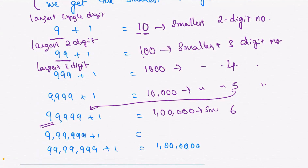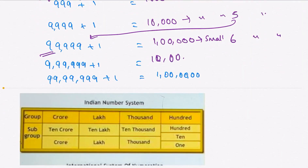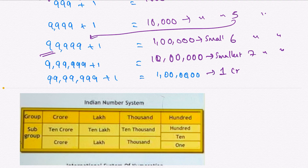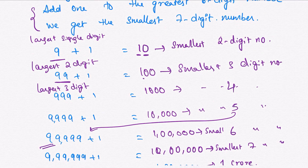Continuing the pattern: the greatest six-digit number is 9,99,999. Adding 1 gives 10,00,000 — the smallest seven-digit number. The greatest seven-digit number is 99,99,999. Adding 1 gives 1,00,00,000 — which is one crore, the smallest eight-digit number. Remember: one crore has seven zeros and a total of eight digits.